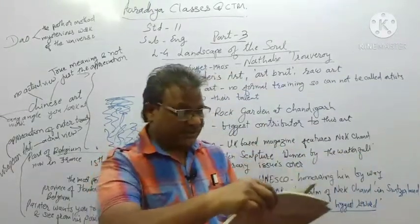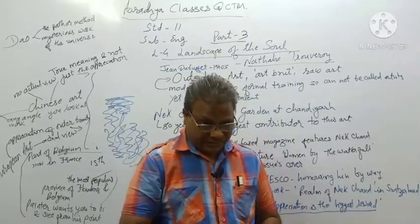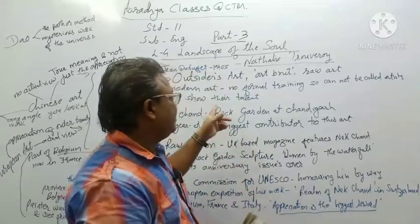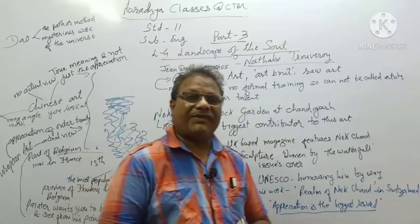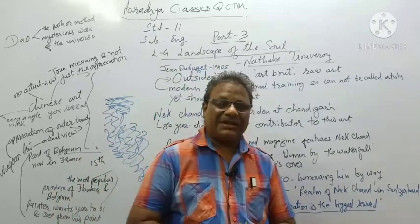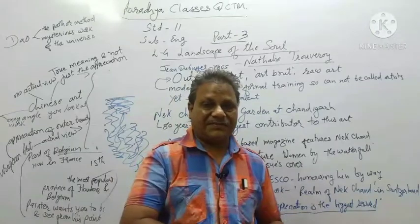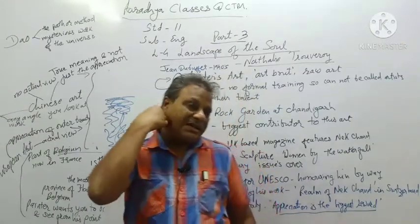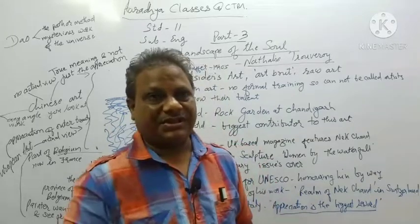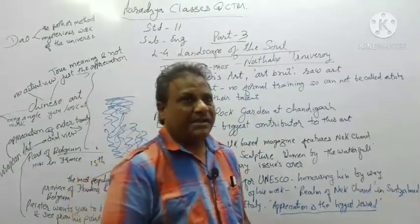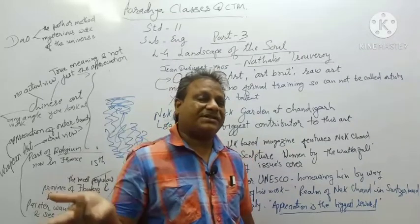What do you understand by the term outsider art, art brute, or raw art? Outsider art or art brute is an art form introduced by Jean Dubuffet in the 1940s. At that time many people did not take interest, but as time went on many people started taking interest. The artists cannot be called artists because they don't have any formal training, and their works are a stimulating contrast to mainstream artists.